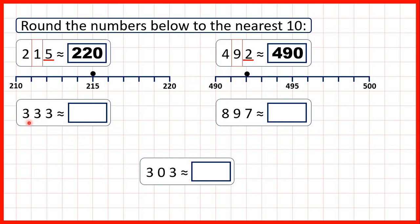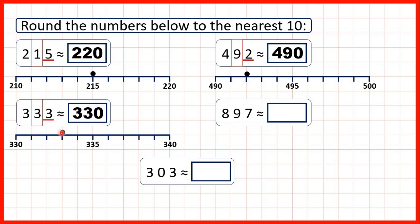Now let's round 333 to the nearest 10. We find our tens digit, underline our ones, and because it's 4 or less, we're rounding down. So the tens digit stays the same, giving us 330. On a number line, we can see that 333 is between 330 and 340, but it's closer to the previous multiple of 10, so that's why we round down.